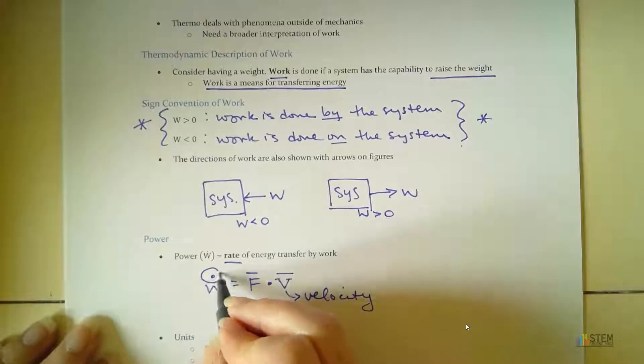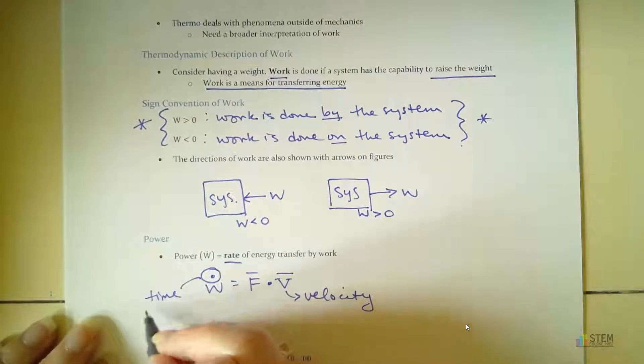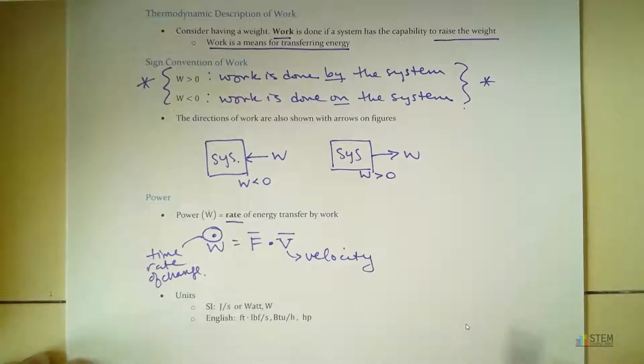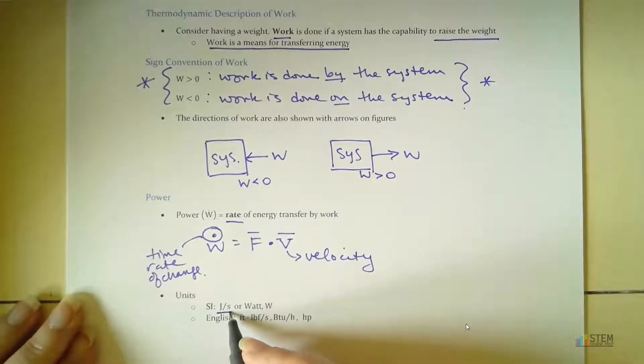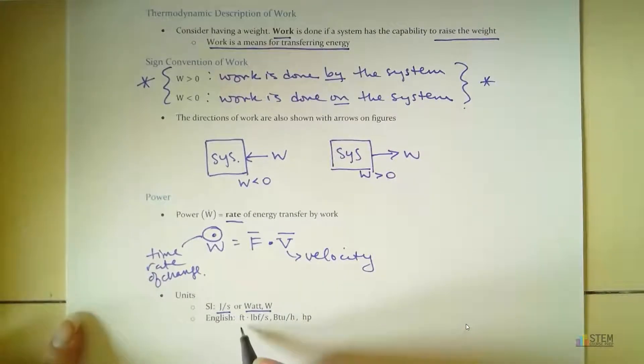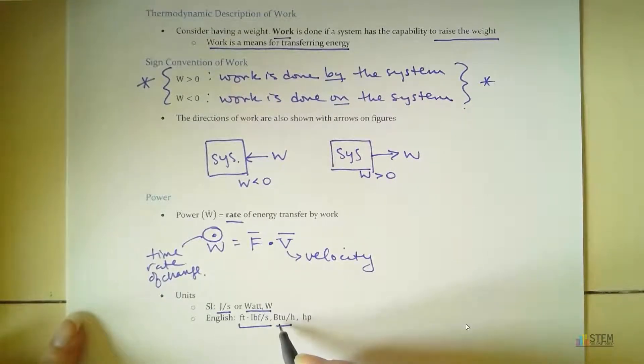And if you haven't seen this dot notation, that just is the time rate of change. So that's just like the first derivative. So don't get confused by the dot. It just indicates the derivative. Now, our units for power, we're going to have joules per second or a watt. And a watt is denoted with a capital W for the unit. Those are the SI units. In English system, we're going to have foot pound force per second, BTU per hour. BTU stands for British Thermal Unit. And then finally, horsepower.